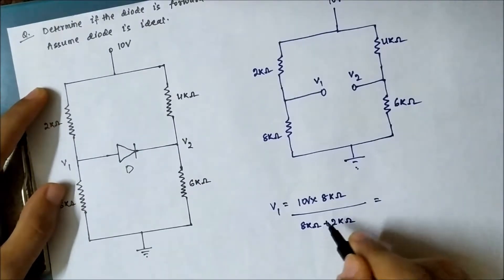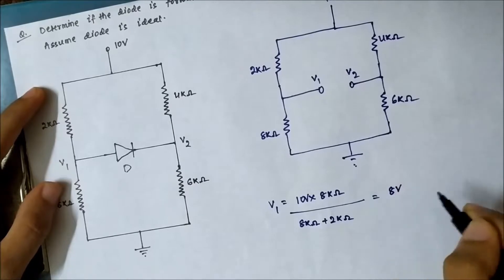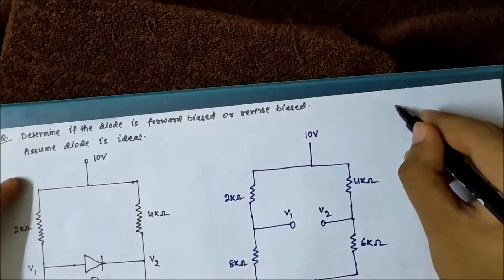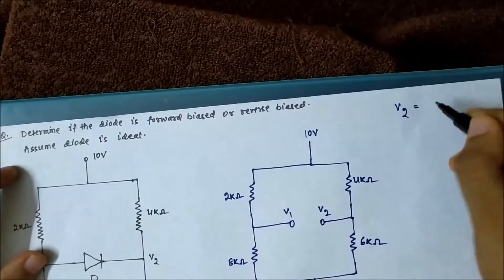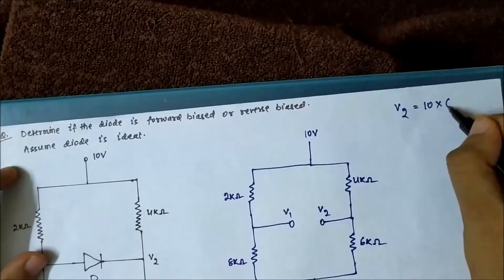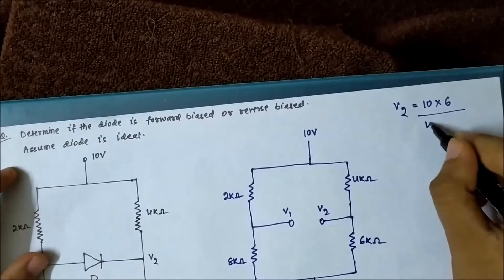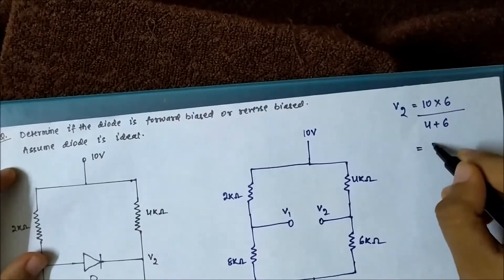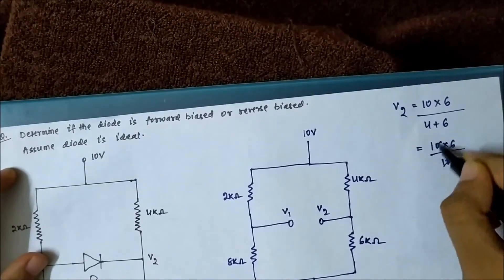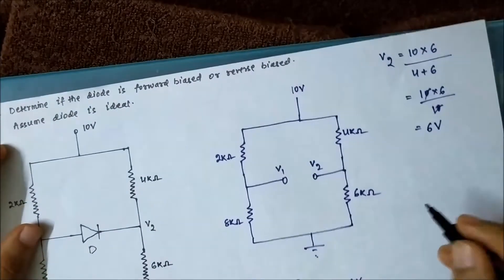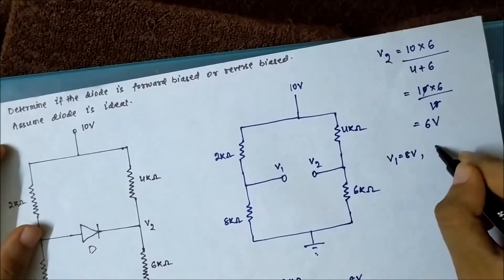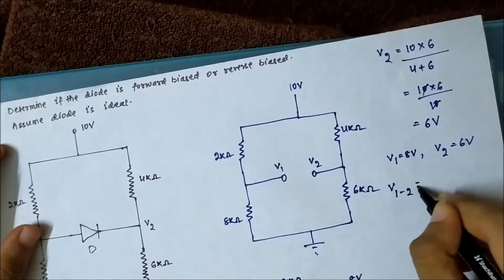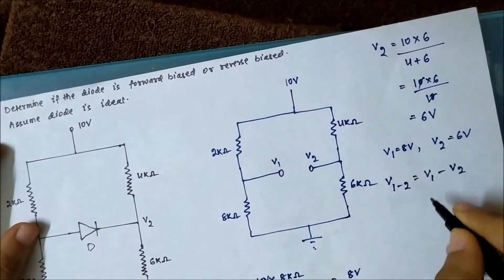Solving for V1: eight plus two is ten, the tens cancel, giving V1 equal to eight volts. Similarly, V2 equals ten times six divided by four plus six, which is six divided by ten. The tens cancel out, giving V2 equal to six volts. So V1 is equal to eight volts and V2 is equal to six volts.